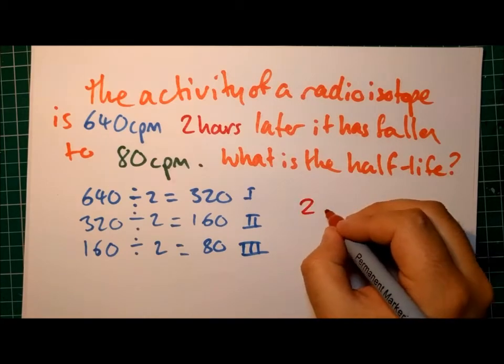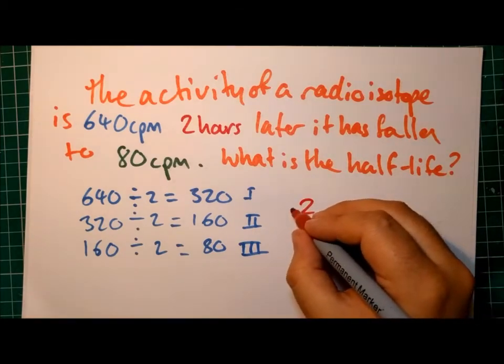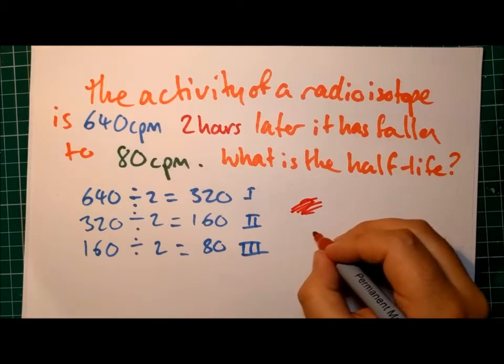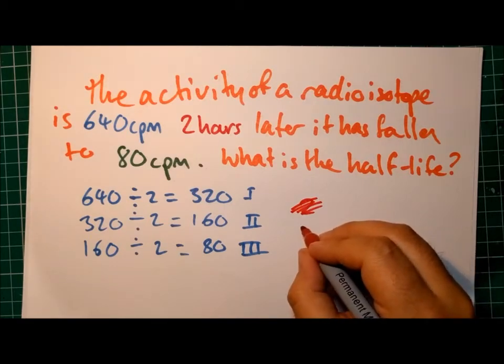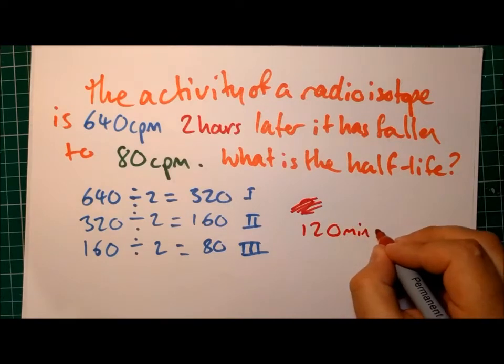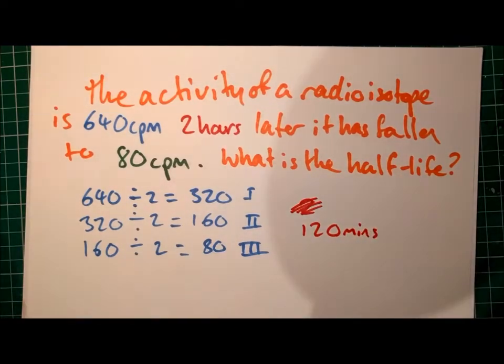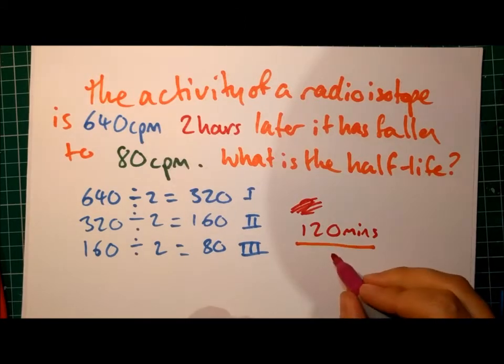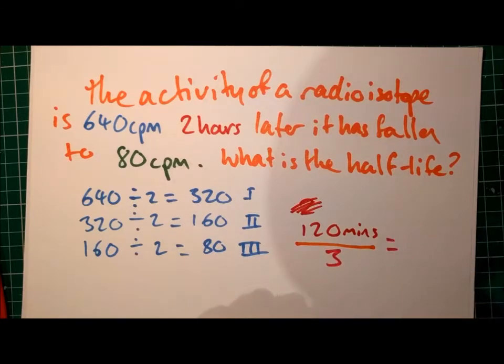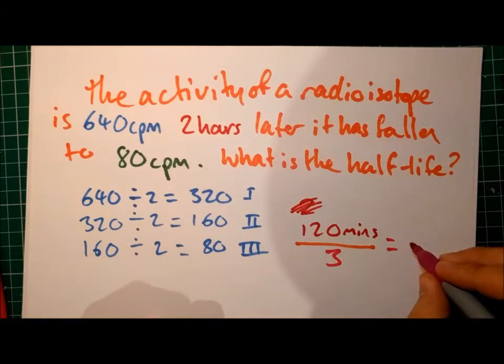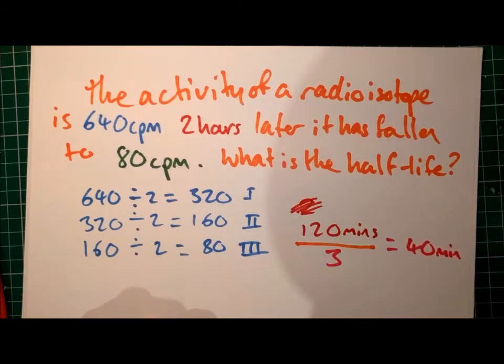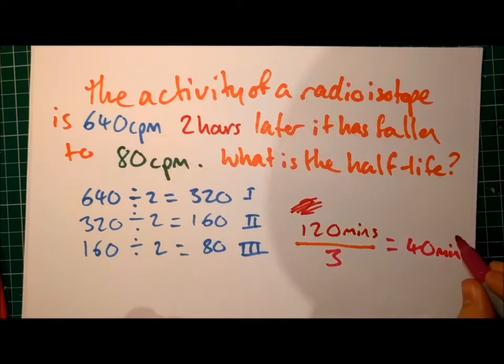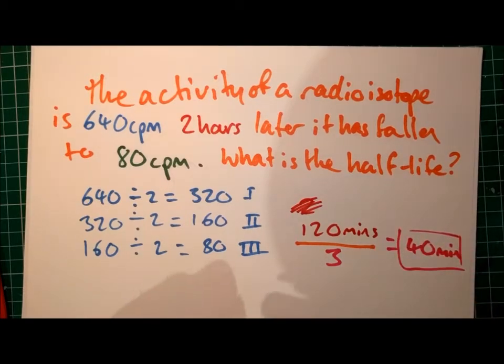So if we do our 2 hours, let's turn that into minutes just for ease of use. So if we say our 120 minutes is divided by the number of half-lives that have occurred, which is 3, that will give us the length of one half-life. 120 divided by 3 should give you 40 minutes. So a single half-life is 40 minutes in length for this particular radioisotope.